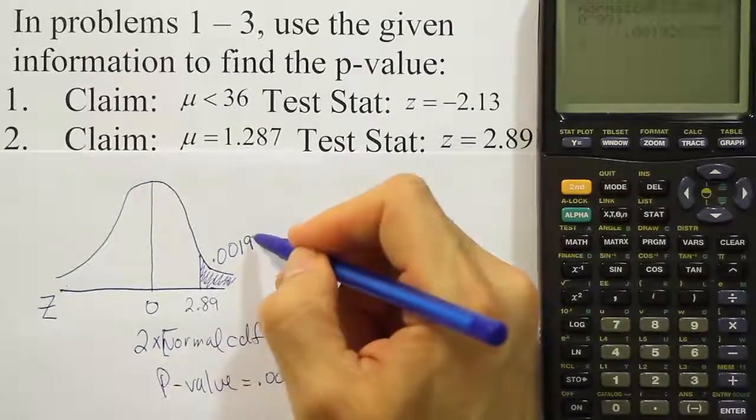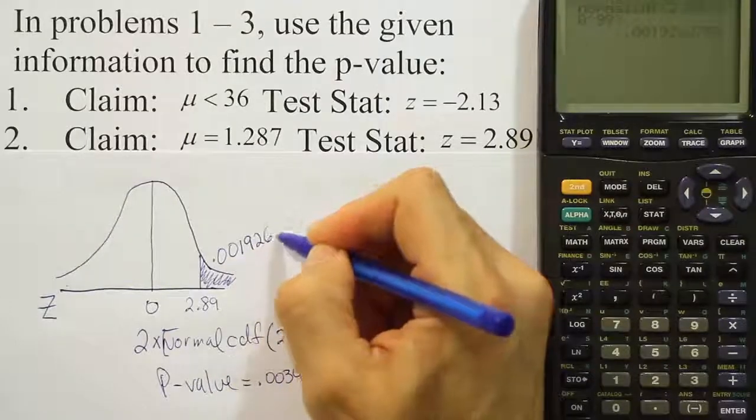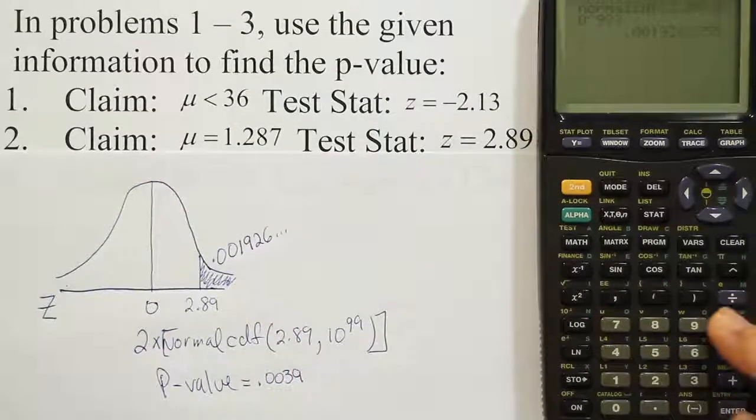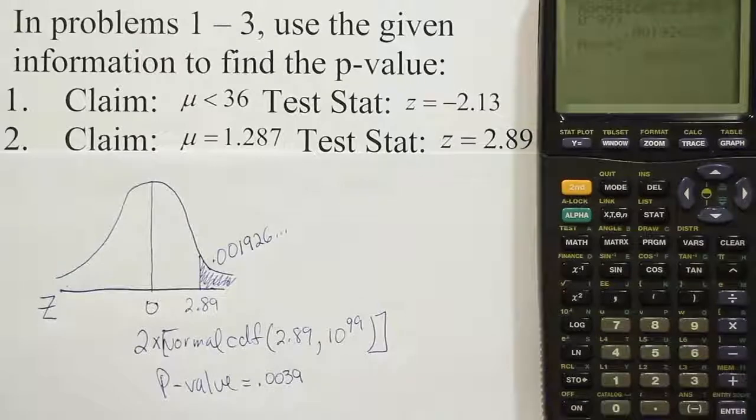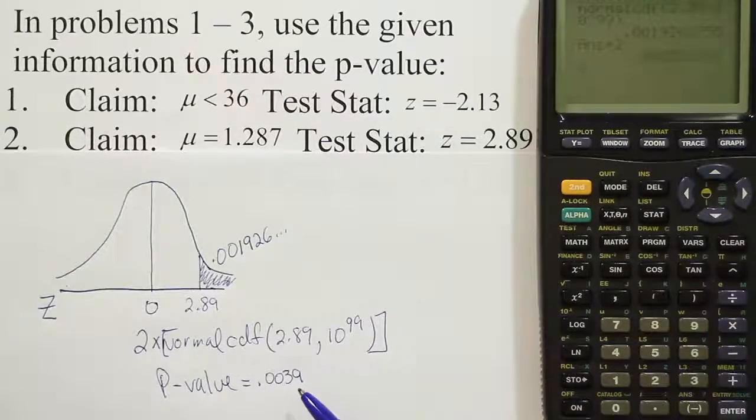And you would have found that this area was .0019. And then, of course, 19, actually 26. And then we would have doubled it in our calculator times 2 and we would have got the same answer we came up with, which is .00385 or .0039.